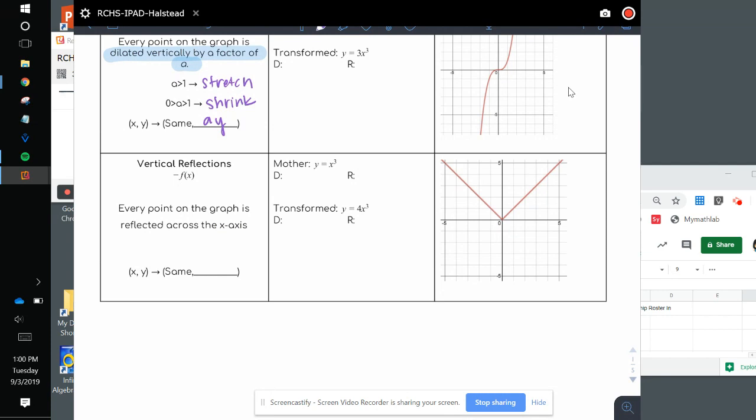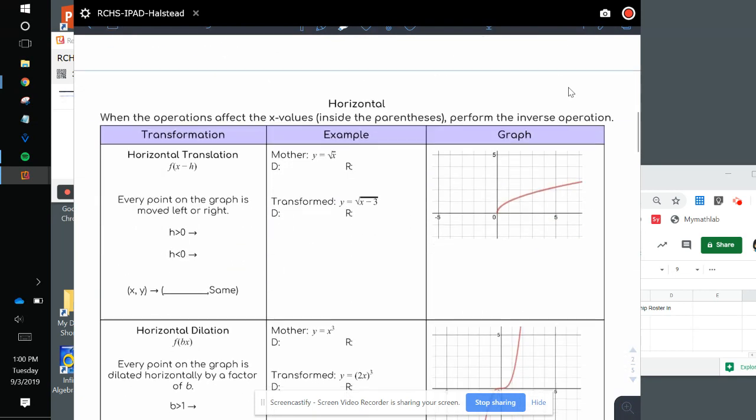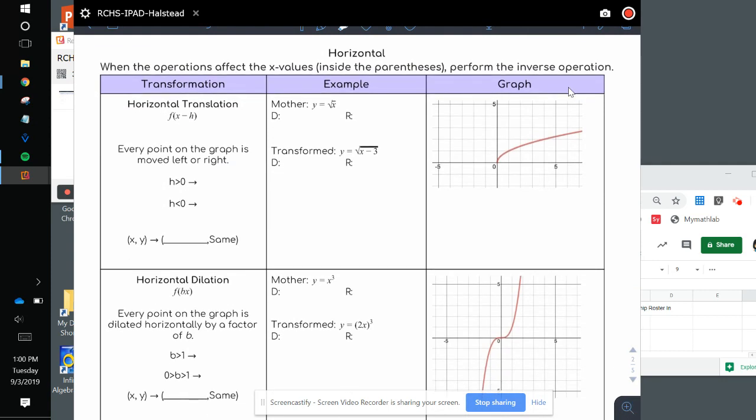A vertical reflection, if you have the function multiplied by a negative, the y point becomes negative y. Then the graph is reflected across the x-axis. All right, on the back, we are looking at horizontal transformations.